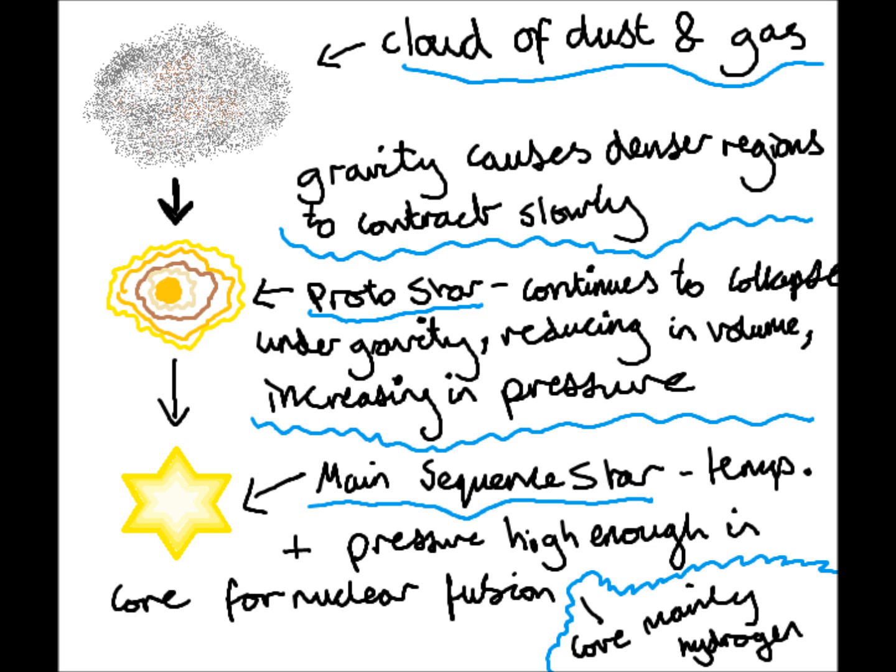Protostar: It continues to collapse under gravity, reducing in volume and increasing in pressure. Temperature and pressure eventually become high enough in the core for nuclear fusion to begin. Then it becomes a main sequence star.